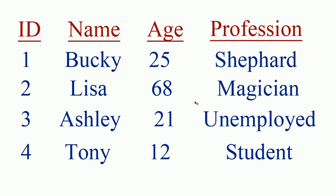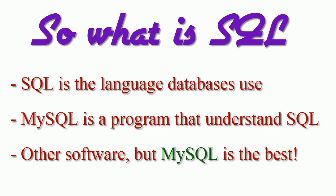You can say to your database 'find all the Ashleys who are 21 and unemployed' and that may give you 500 results, but if you're only looking for one specific Ashley, you would instead say 'find the person with ID of three.' That is why you use a primary key — it's guaranteed to return only one result. So if this Ashley needed to be removed from the database, instead of saying 'remove Ashley' — which might remove 500 people — you just say 'remove the person with ID of three' and you're done.